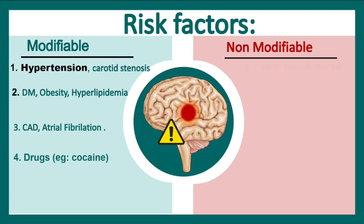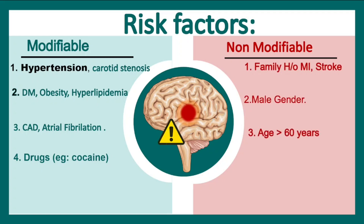Non-modifiable factors include family history of MI and stroke, male gender, age more than 60 years, or ethnicity. African Americans, Hispanics, and Asians are more prone to develop stroke.